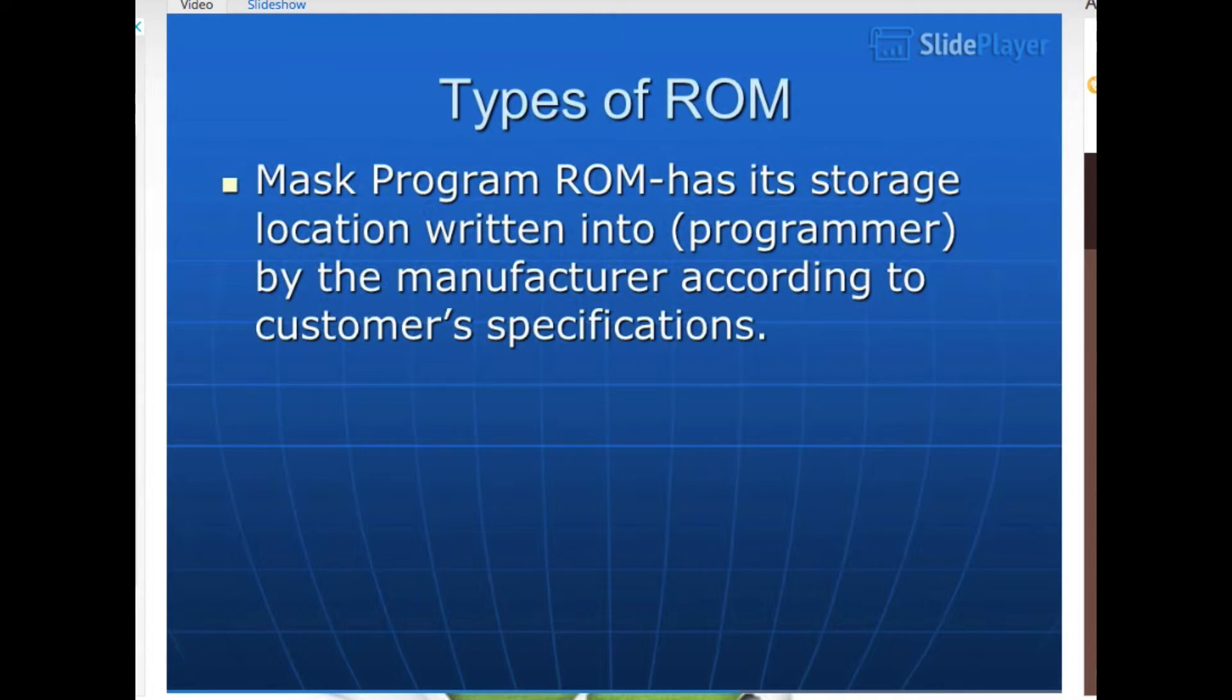Types of ROM. Mask program ROM has its storage location written into or programmed by the manufacturer according to customer's specifications.